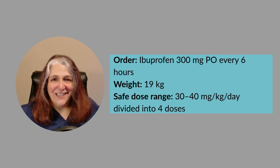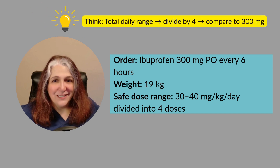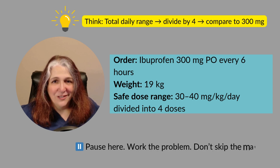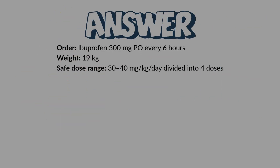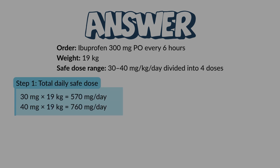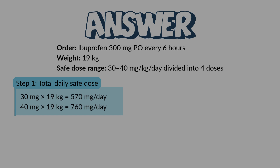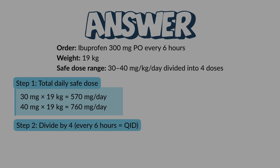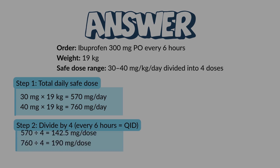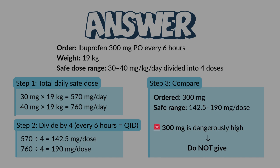Now it's your turn. Can you figure out if this dose is safe or dangerously high? Pause the video here and try it on your own, then restart and see if your judgment matches mine. Step one: start by getting your total daily safe dose. Step two: we're giving this every six hours, so divide by four. Step three: compare the order to your safe dose range. 300 milligrams is dangerously high — do not give.